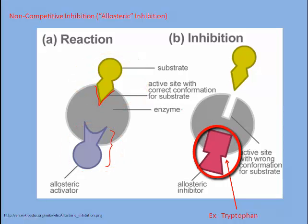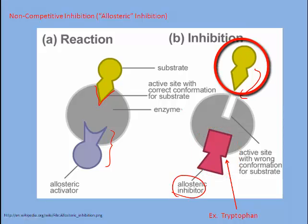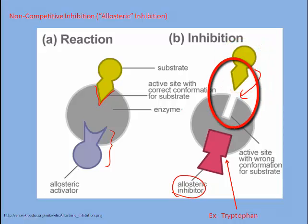That requires an allosteric activator. However, if an inhibitor fits into the allosteric site, the substrate is locked out of the active site because the active site is now the wrong conformation for that substance. This results in the reaction rate being very low. This may also be reversible or irreversible.